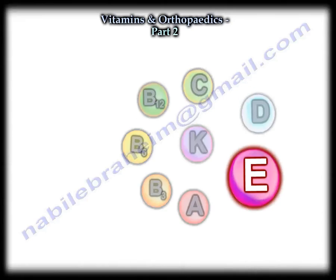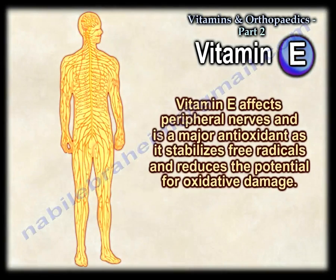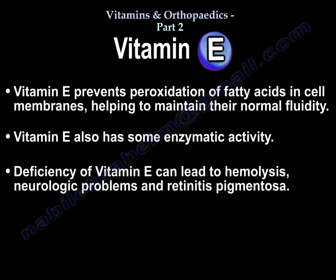Vitamin E affects peripheral nerves and is a major antioxidant, as it stabilizes free radicals and reduces the potential for oxidative damage. Vitamin E prevents peroxidation of fatty acids in cell membranes, helping to maintain their normal fluidity. It also has some enzymatic activity. Deficiency of vitamin E can lead to hemolysis, neurological problems, and retinitis pigmentosa.